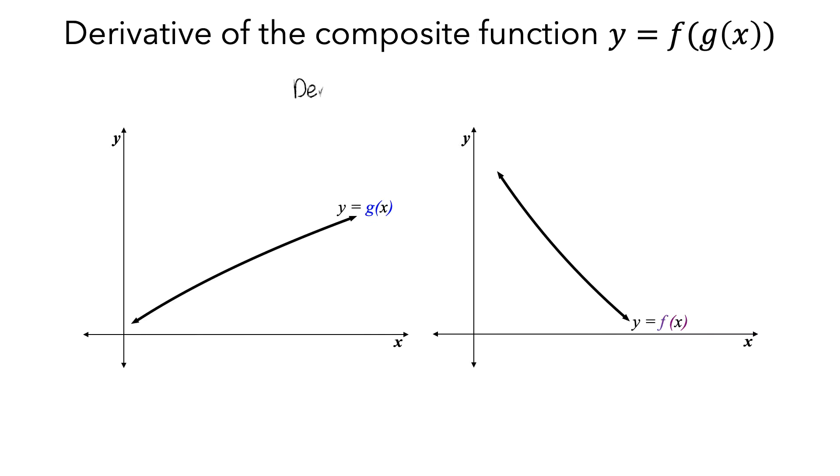Our goal is to understand the derivative of the composite function y equals f(g(x)). We know that the derivative of a function at a value x equals a is equal to the ratio of a small change in f to the corresponding small change in x. So, we want to know how much the output of the composite function changes as the input changes by the really small amount dx.